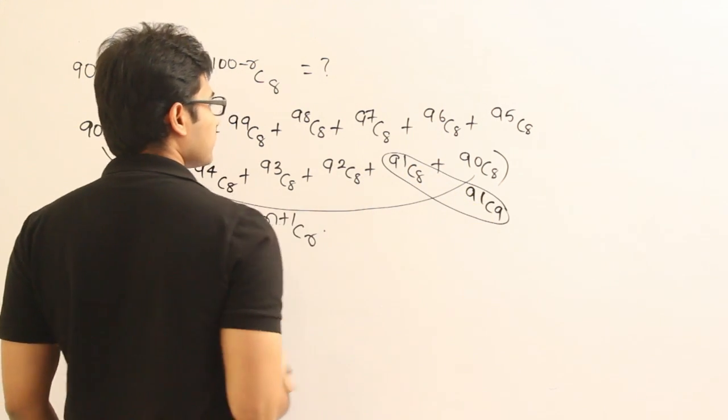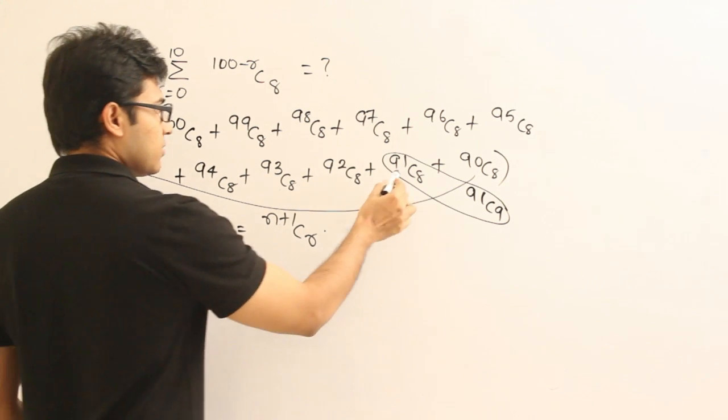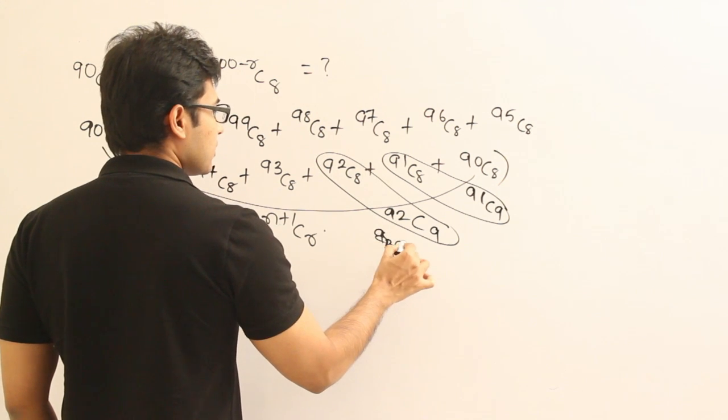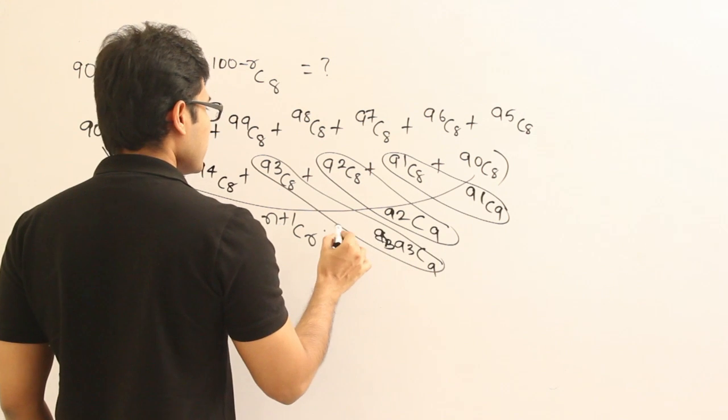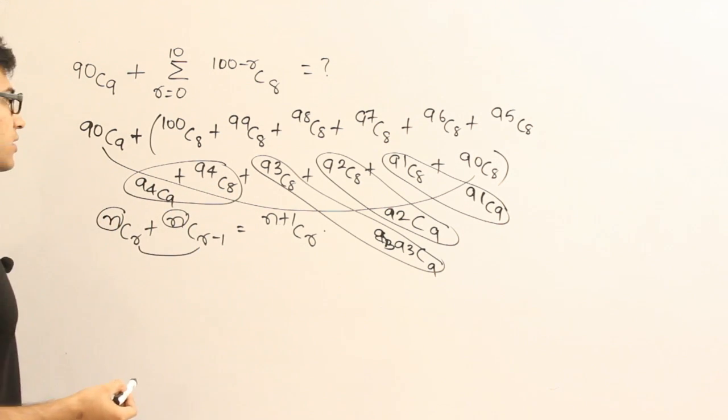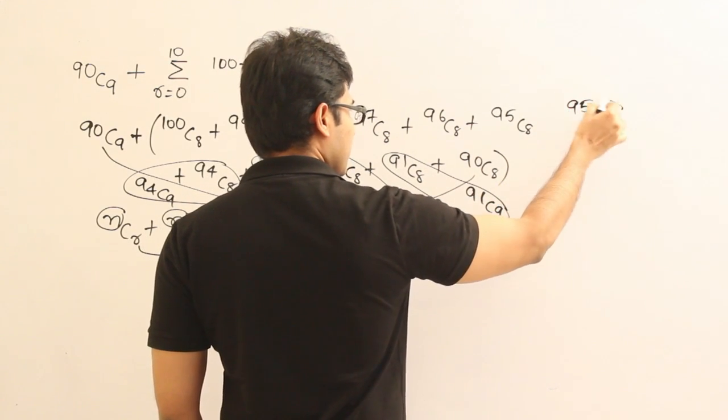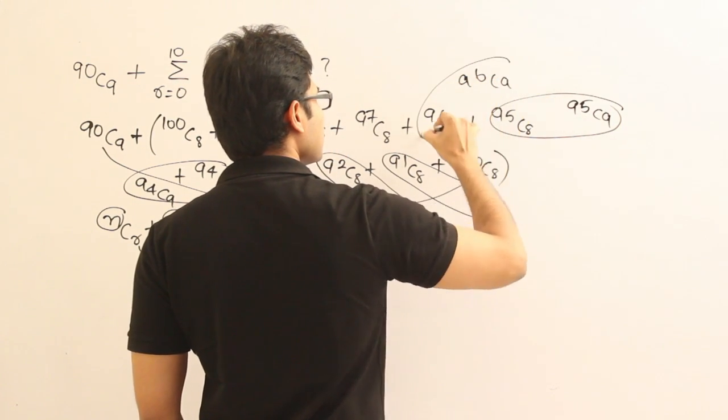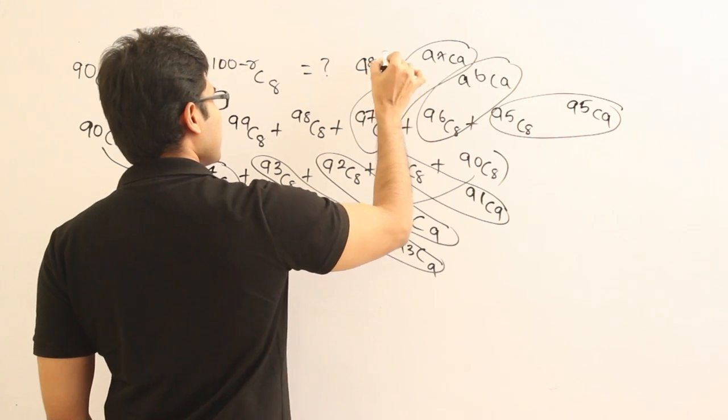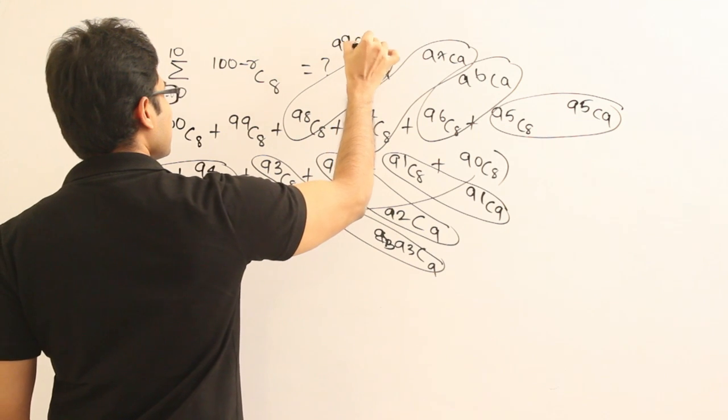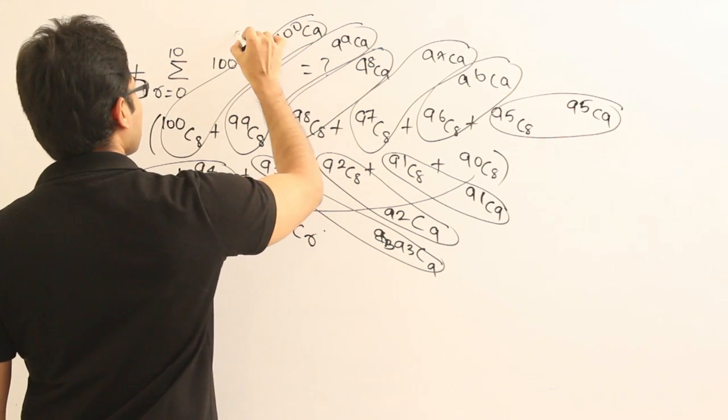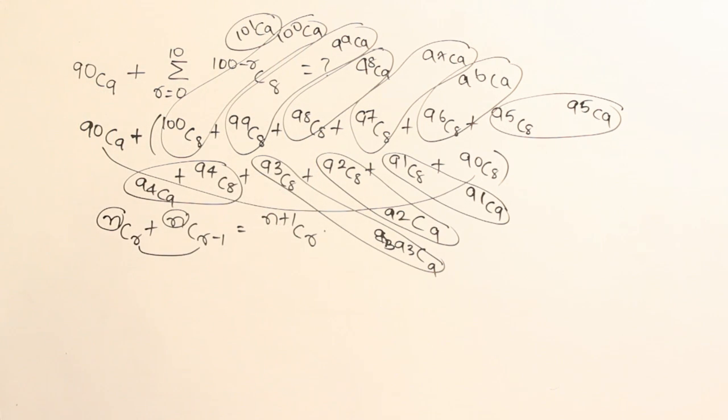And now these two can be combined. So if I combine these two, what do you get? Again, N plus 1 which is 92 and then 9C9. And again these two can be combined. Then what do we get? 93C9. Again, these two can be combined. What do we get? 94C9. Again, these two can be combined. 95C9. And again these two can be combined. 96C9. These two can be combined. 97C9. These two can be combined. 98C9. These two can be combined. Then we get 99C9. These two can be combined. Then we get 100C9. These two can be combined. Then we get 101C9. Therefore the answer is 101C9.